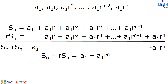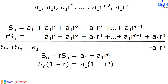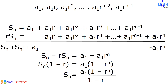Let us find the factor on the left side and on the right side. On the left side, the common factor is S sub n. We have S sub n times the quantity 1 minus R. On the right side, the common factor is A sub 1, and we have A sub 1 times the quantity 1 minus R raised to n. To solve for S sub n, we will divide both sides by 1 minus R. S sub n times the quantity 1 minus R divided by 1 minus R, the answer is equal to S sub n. And we have S sub n equals A sub 1 times the quantity 1 minus R raised to n, divided by 1 minus R.